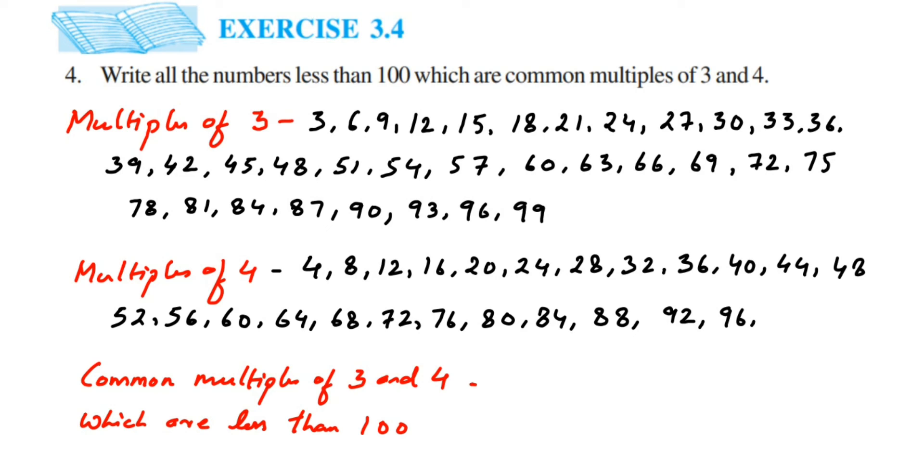Let's mark all the common multiples. If you check here, the first number is 12. Then 15, 18 are not there. We have 24, and the next, if you check, 30, 33—36 is present in both.